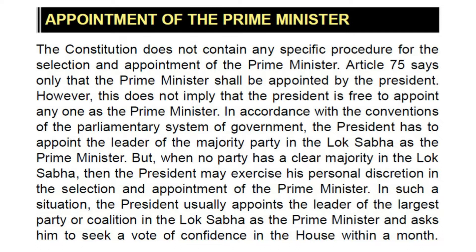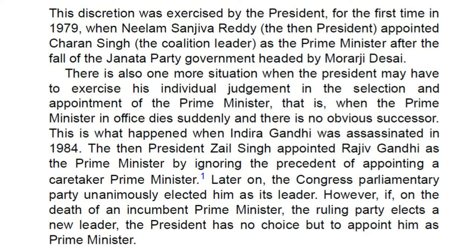But when no party has a clear majority in the Lok Sabha, then the President may exercise his personal discretion in the selection and appointment of the Prime Minister. In such a situation, the President usually appoints the leader of the largest party or coalition in the Lok Sabha as the Prime Minister and asks him to seek a vote of confidence in the House within a month. This discretion was exercised by the President for the first time in 1979 when Neelam Sanjiva Reddy, the then President, appointed Charan Singh, the coalition leader, as the Prime Minister after the fall of the Janata Party government headed by Morarji Desai.